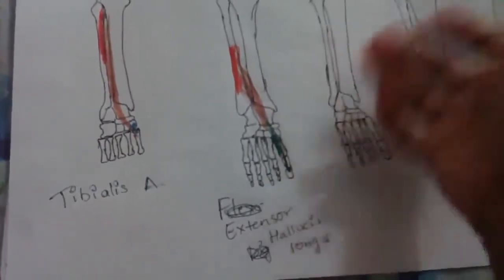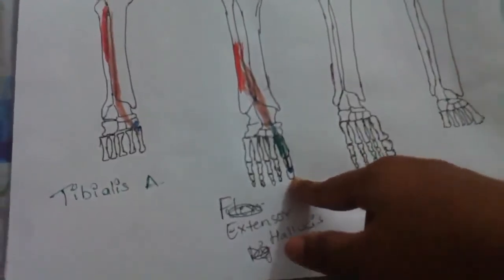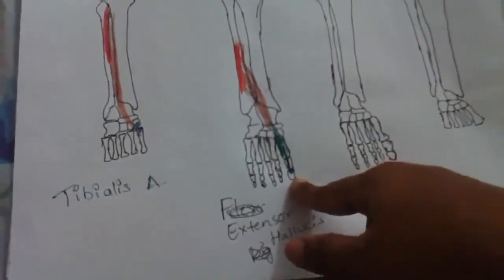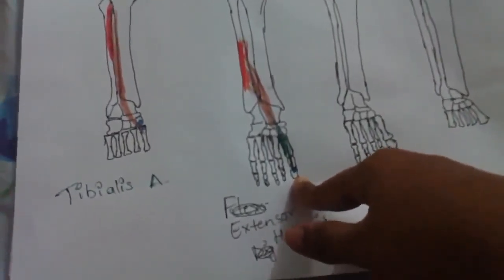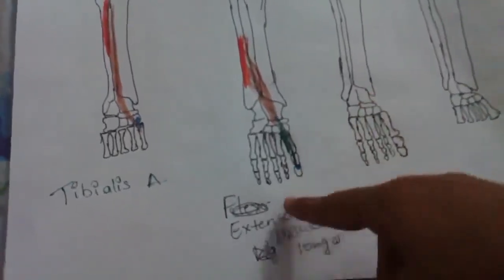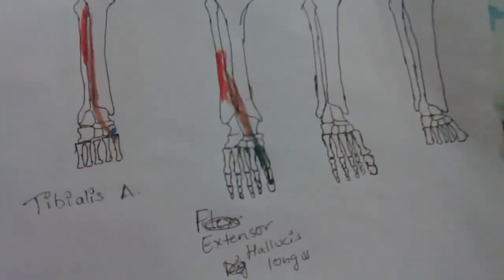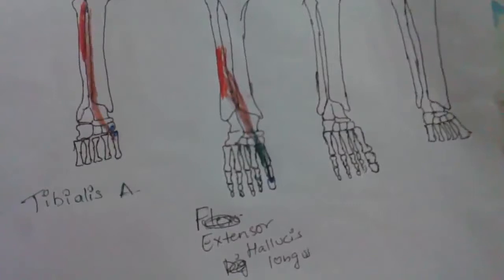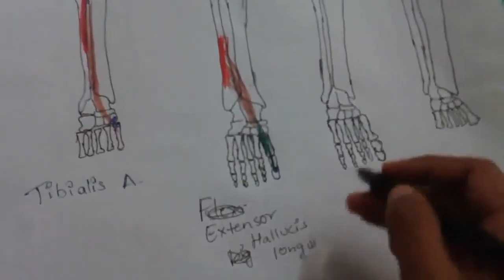The nerve supply of extensor hallucis longus is the anterior tibial nerve. Whenever it contracts, the big toe moves upward — so it helps in the extension of the phalanges of the big toe.